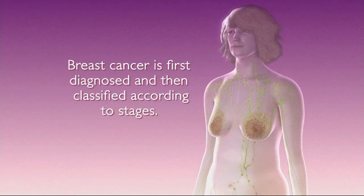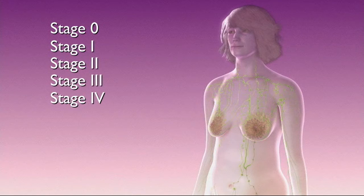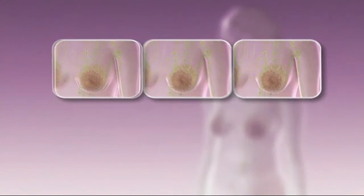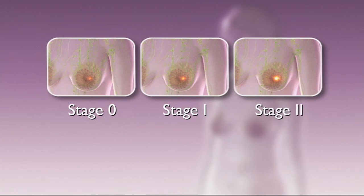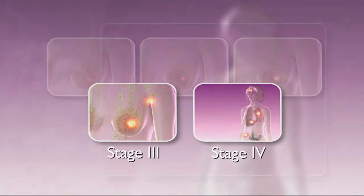Breast cancer is first diagnosed and then classified according to stages — these stages are 0 through 4. Early breast cancer is considered cancer that has not spread beyond the breast tissue or lymph nodes under the arm, and is classified as stage 0, 1, or 2. Advanced breast cancer is cancer that has spread in size or location and is present in other parts of the body, typically classified as stage 3 or 4.